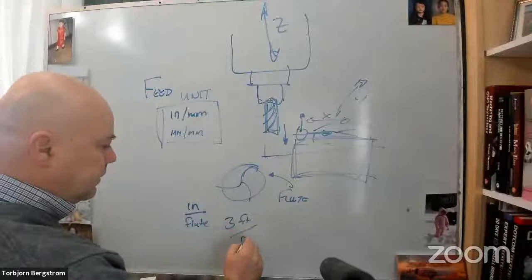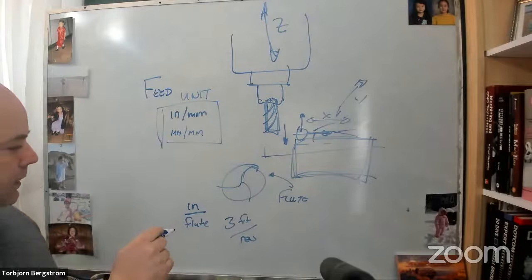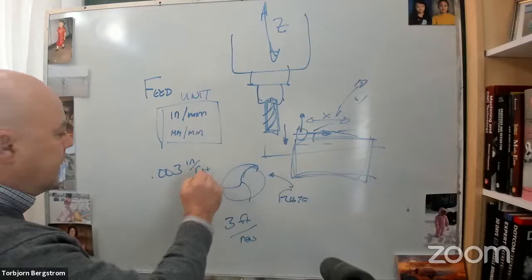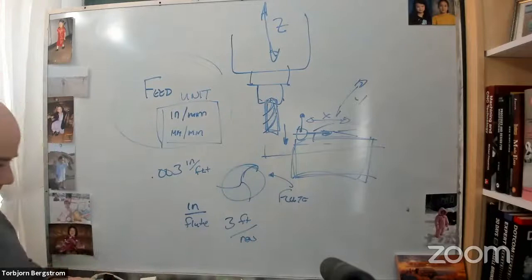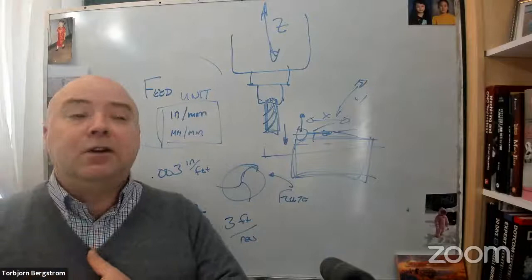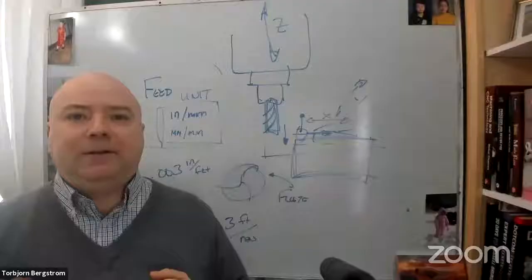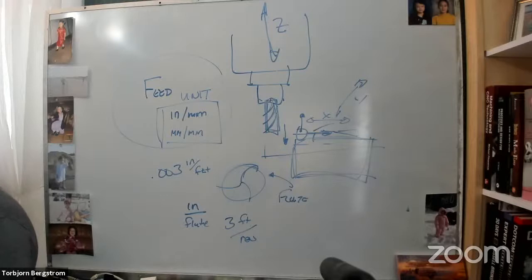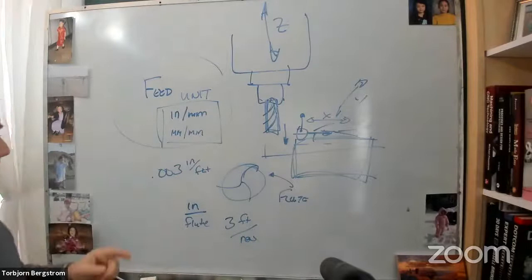Inches per flute, three flutes per revolution. So if we know the feed is 0.003 inches per flute, and we want to know what the feed is in inches per minute, what do we have to do? If I was the one answering the question, my answer right now is we have to do math. But what's the math we have to do in order to get from 0.003 inches per flute to inches per minute?